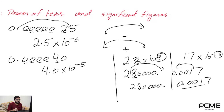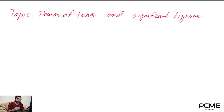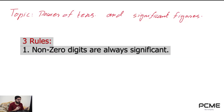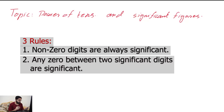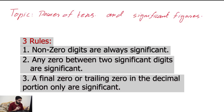Now let's move to the next topic: significant figures. The first thing you need to know is what significant figures are. Significant figures are the digits in a value — often a measurement — that contribute to the degree of accuracy of the value. We start counting significant figures at the first non-zero digit. To determine the number of significant figures in a number, use three rules: one, non-zero digits are always significant; two, any zero between two significant digits is significant; three, a trailing zero in the decimal portion only is significant.